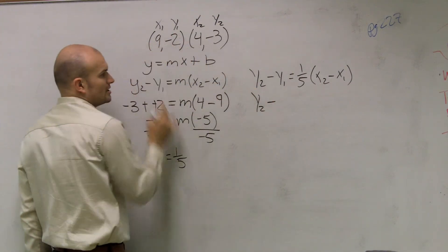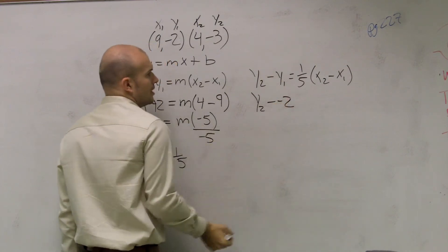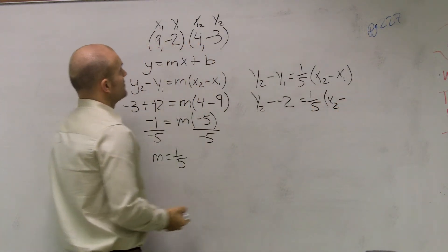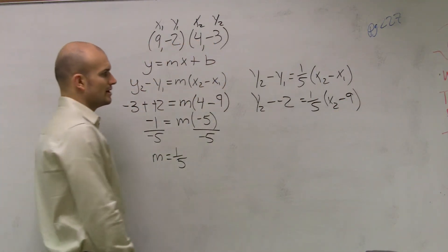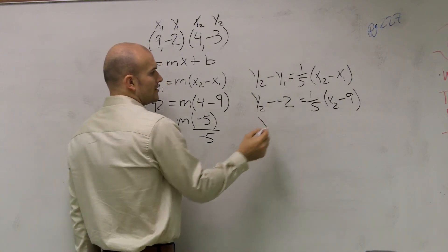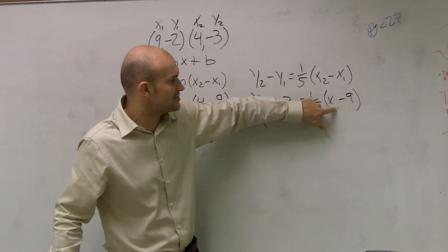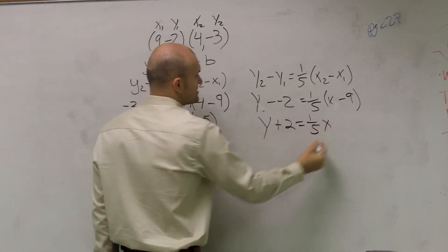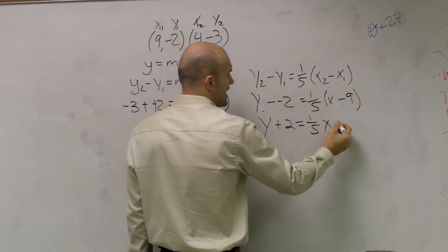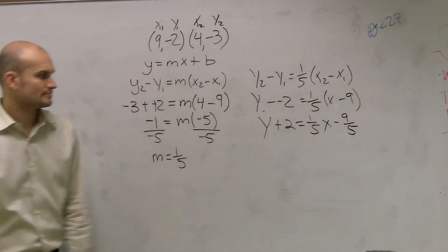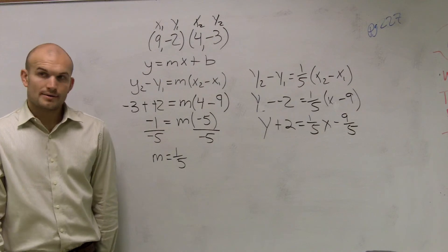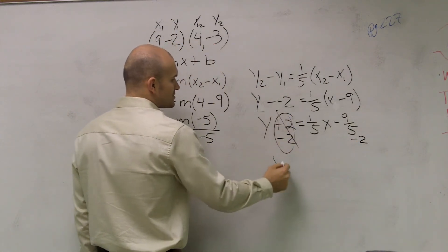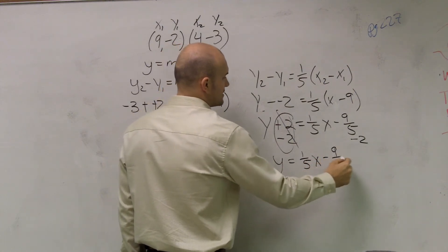Remember, I told you guys to plug in the point that's going to make it the simplest, which would be y1 and x1, minus my x1, which is 9. This is going to get a little confusing, but hopefully you guys will remember your fractions. Now I only have one x and one y, so I don't need to keep writing x2, y2. So I have y minus a negative 2, which is plus 2, equals 1 fifth times x. I'm going to distribute: 1 fifth times negative 9 is negative 9 fifths. So y equals 1 fifth x minus 9 fifths minus 2.